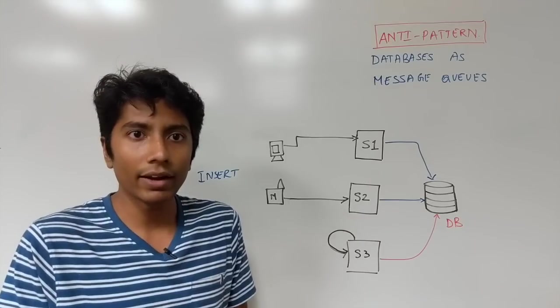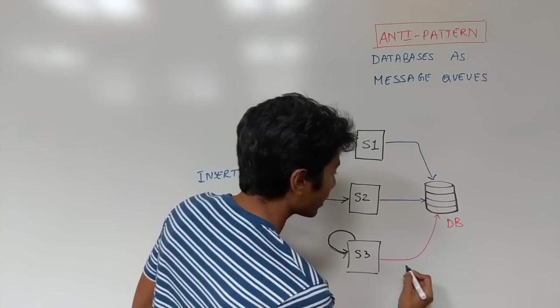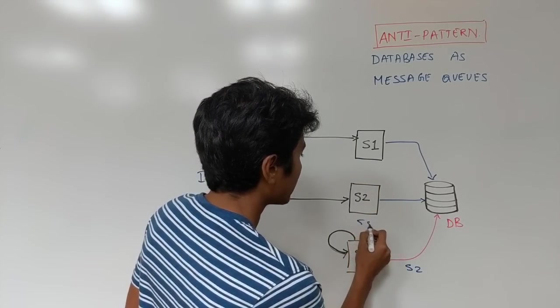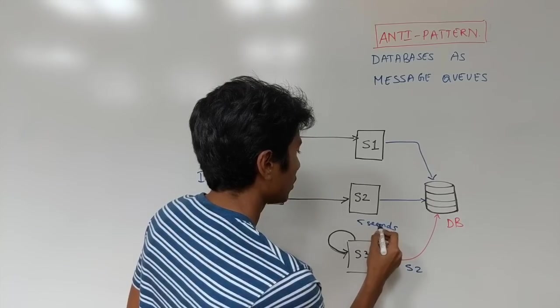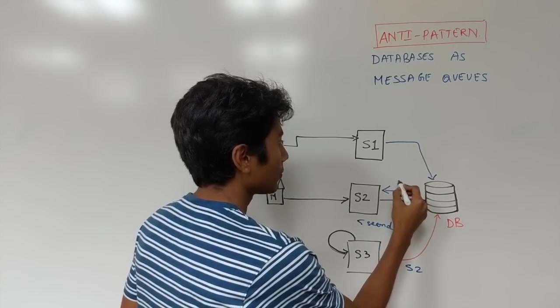And after reading it, it will do something with that message. So in the first case, if S3 is sending a message to S2, and after 5 seconds, S2 tries to read that message from the database, gets it, and pulls it out of the database for itself.